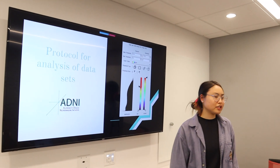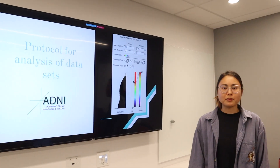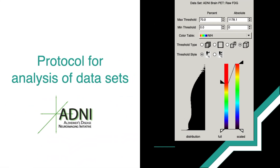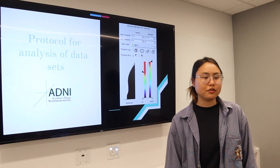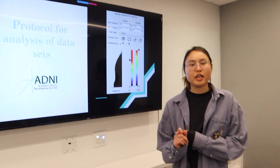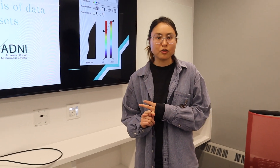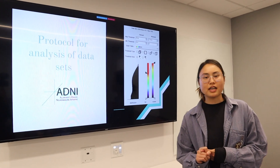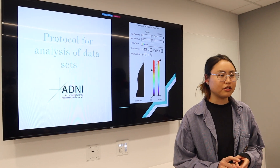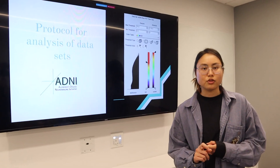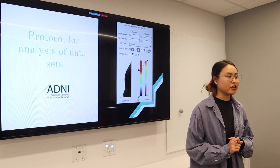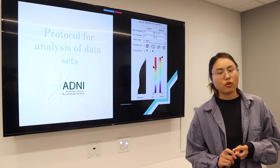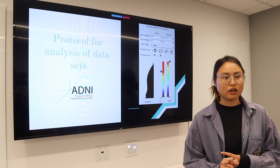Dynamic FDG PET images were acquired from the ADNI dataset. We analyzed these images with the AMIDE software for three regions of the brain: the hippocampus, the cerebellum, and the frontal lobe. We chose these three regions because, as indicated in the literature, they are highly susceptible to degeneration in patients with Alzheimer's disease or mild cognitive impairment.